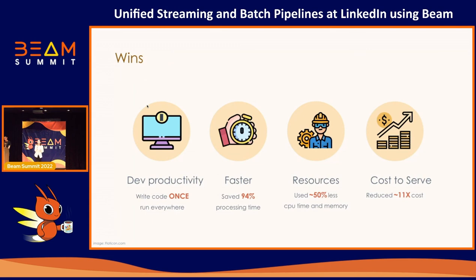Given all the benchmarking results, we think there are four main wins to share. The first is productivity: with unified streaming and batch pipeline, we can write code once and run it in different environments whether streaming or batch. It is also faster — it saved 94% of processing time and half of the resources. According to our cost-to-serve analysis, the operating cost is now reduced by 11 times compared with before.